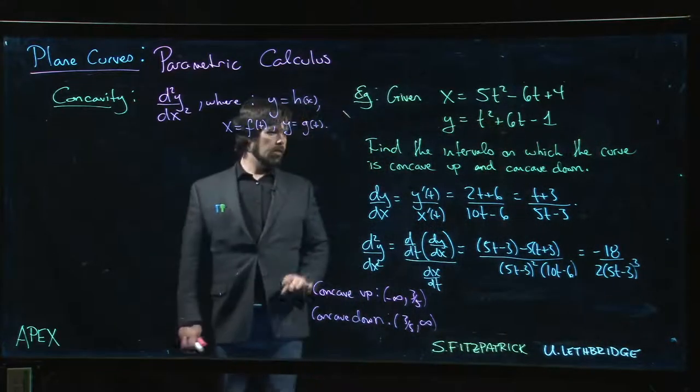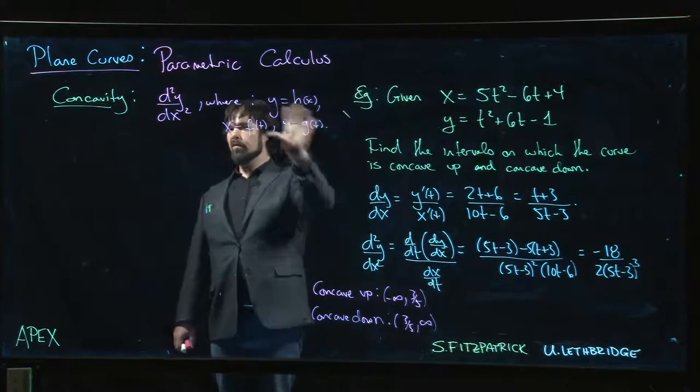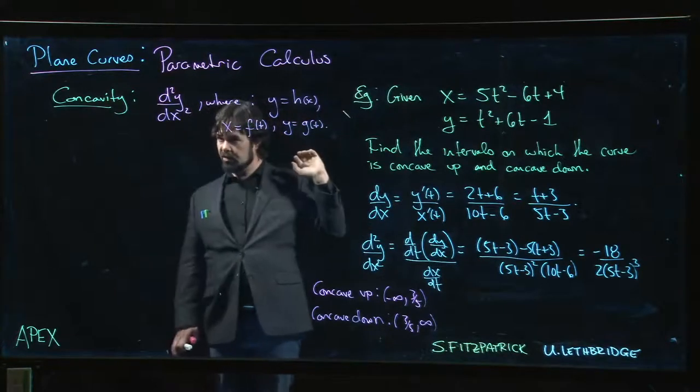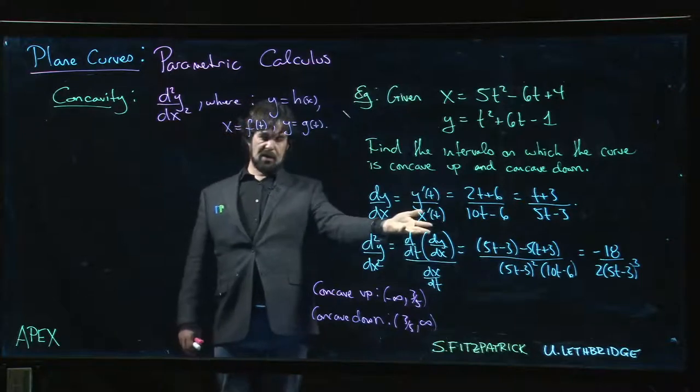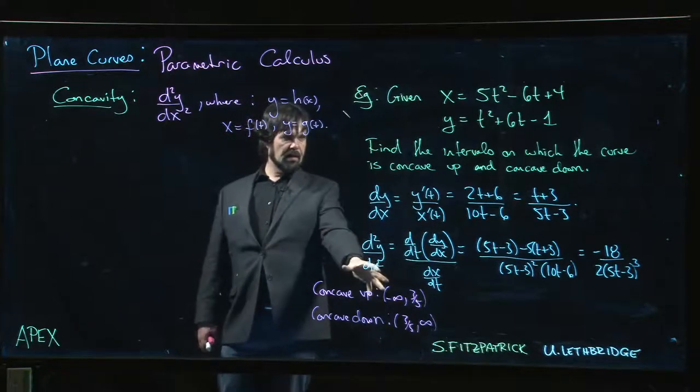In the last video, we figured out how to calculate the second derivative, d²y/dx², so we can get concavity. We did a particular example and were able to find the intervals where this particular curve is concave up and concave down.